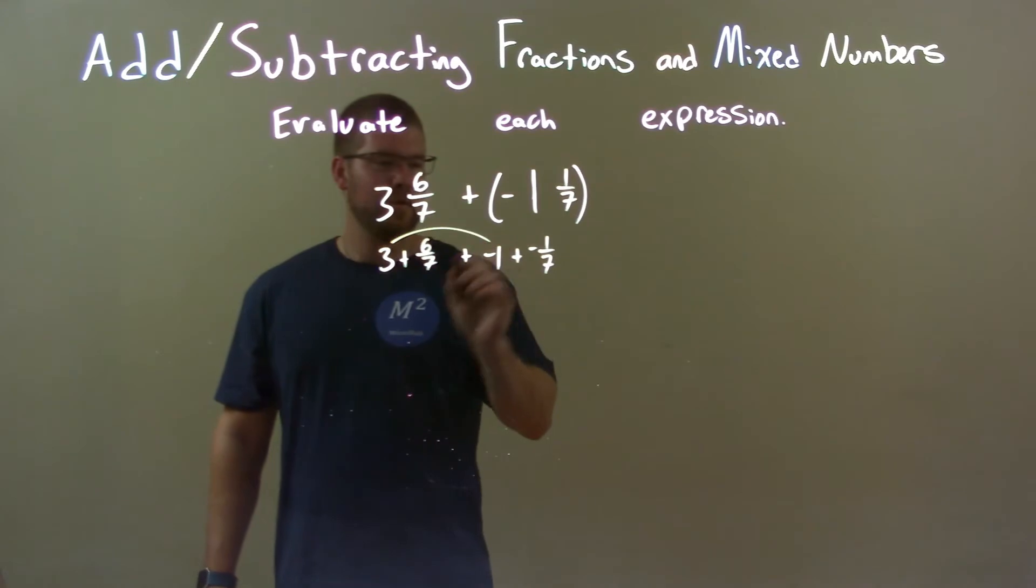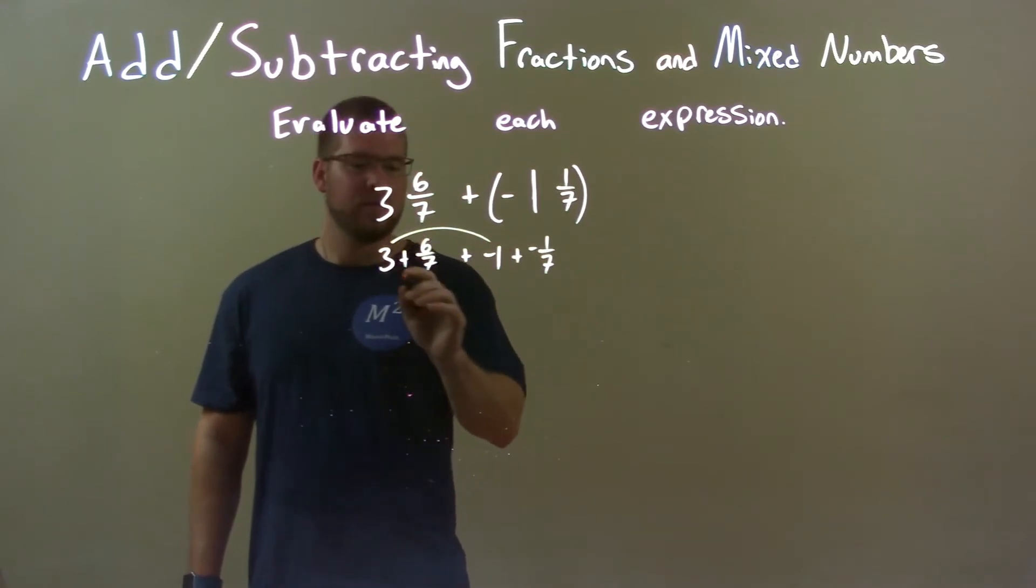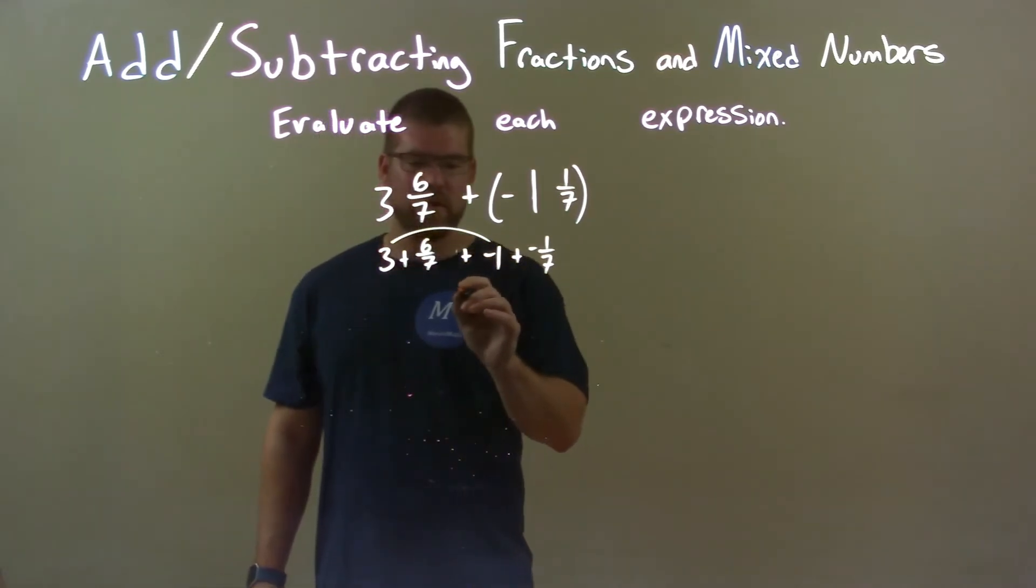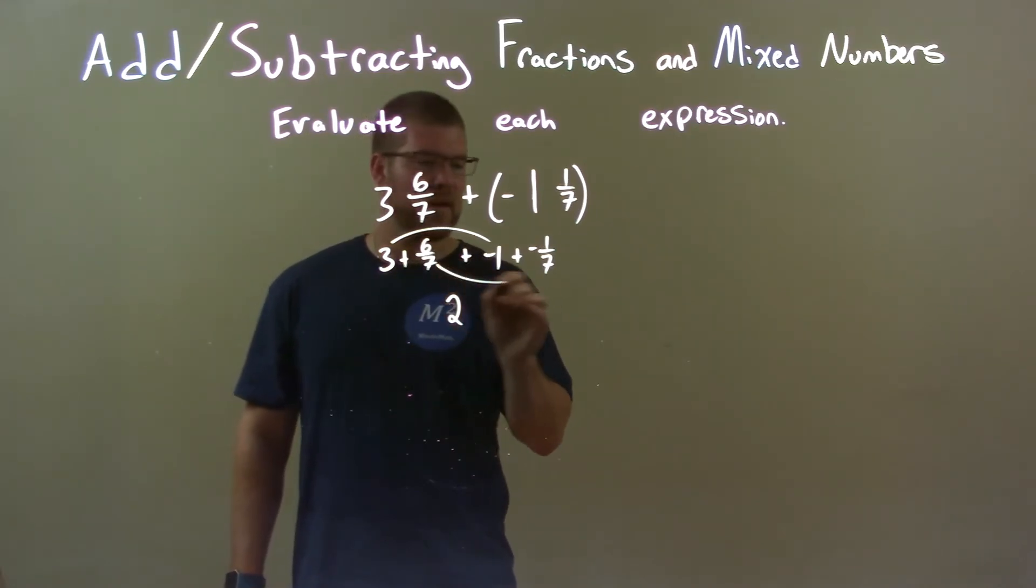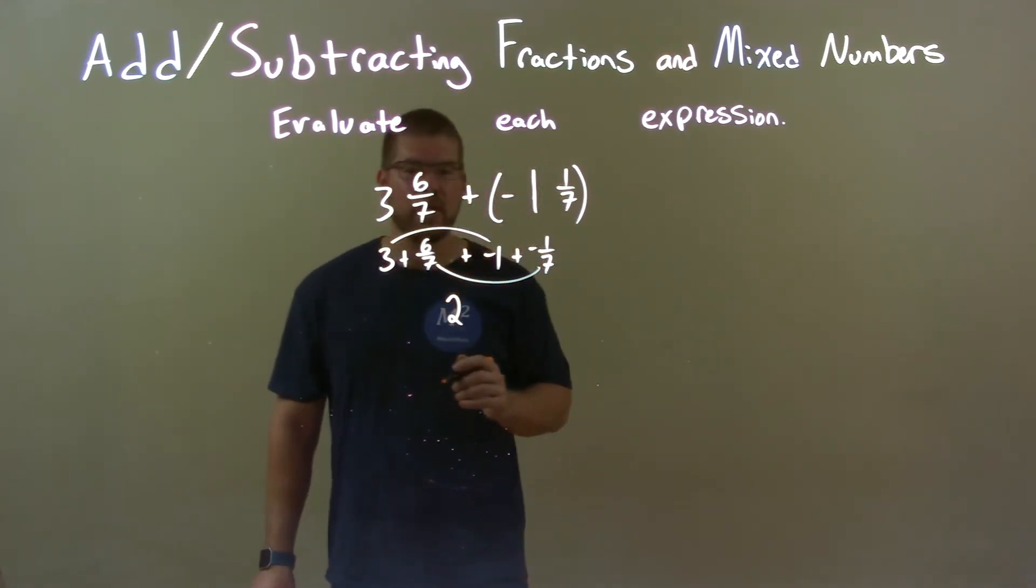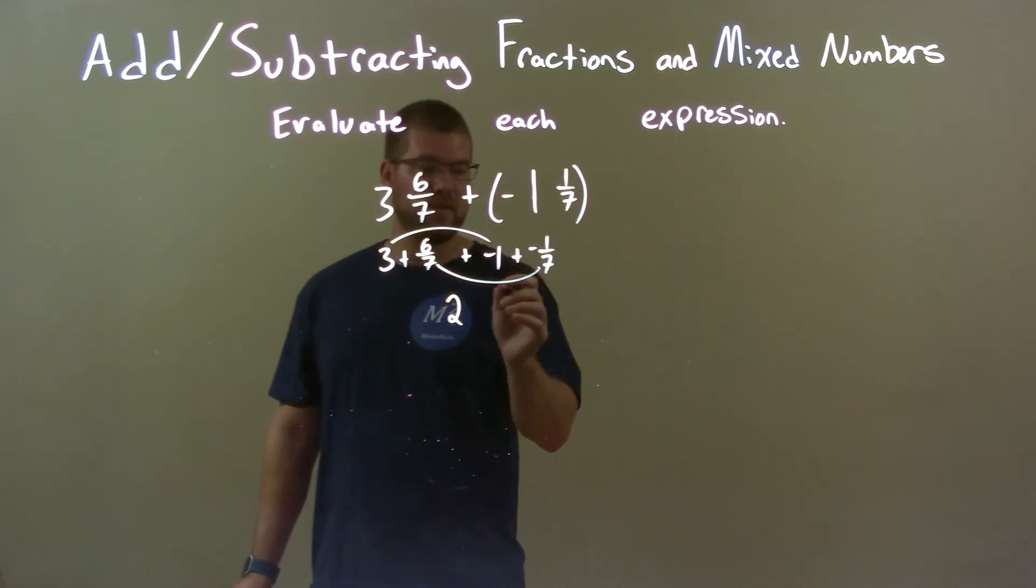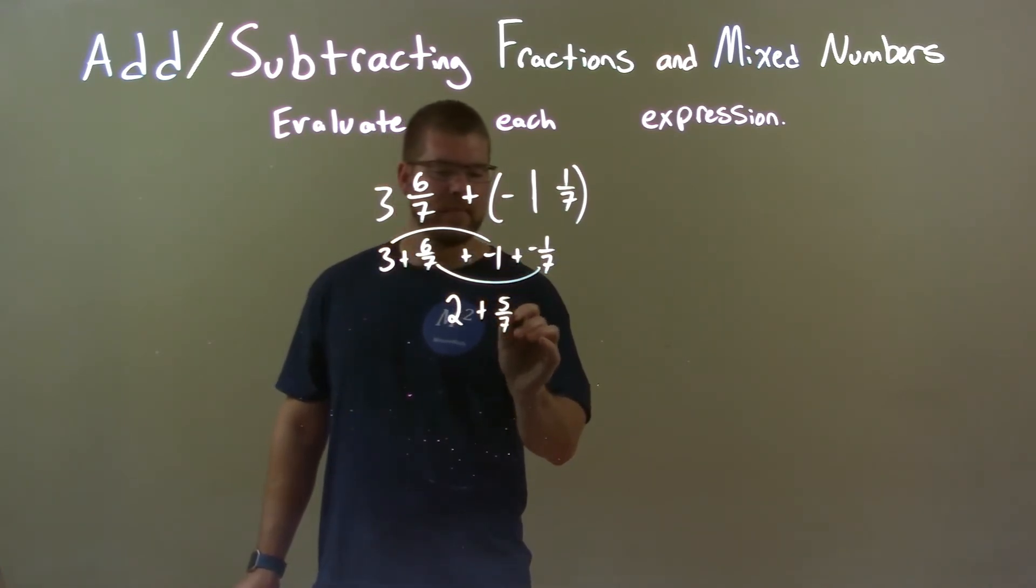Now, let's pair like numbers or whole numbers. So 3 and negative 1 come out to be positive 2. And 6/7 and negative 1/7 is plus 5/7. So we have 5/7 right there.